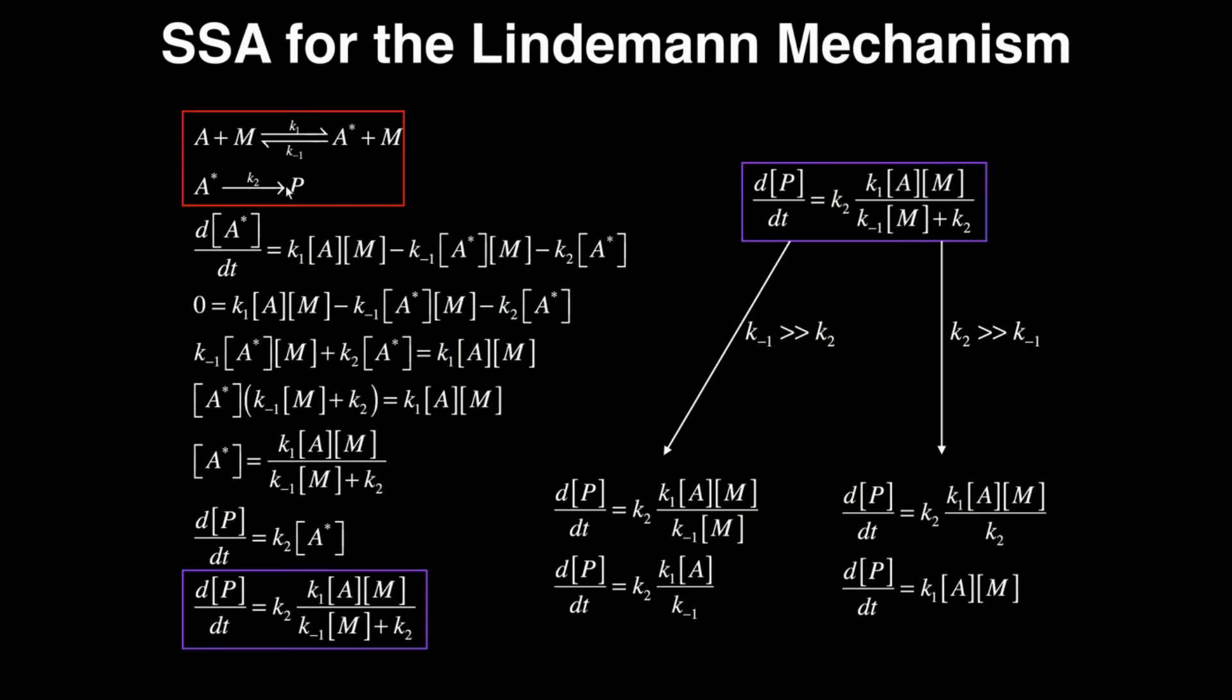Then A star is consumed by K2 to form the product. So it's going to be minus because it's being consumed, K2. And the reactant with respect to that reaction is A star only. So [A*]. So let's set this derivative equal to zero. So I still have all this over here. Zero is equal to K1[A][M] minus K-1[A*][M] minus K2[A*].